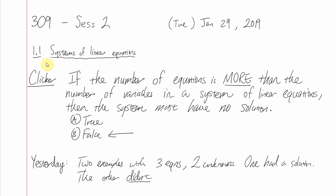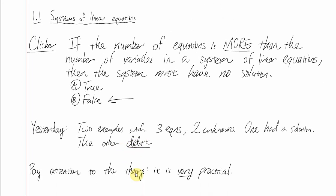This is meant to cover some of the key ideas of Section 1.1, Systems of Linear Equations. There was going to be a clicker question — true or false: if the number of equations is more than the number of variables in a system of linear equations, then the system must have no solution. You can see an arrow giving away that this is false. Yesterday we had an example with three equations and two unknowns where question three had a solution and question four did not.